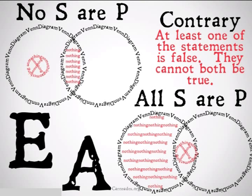It should be clear that if E is the case, then A can't be true. They can't both be true, because if E is the case, that X falls into that area of nothing for the A. And similarly, if A is true, E can't be true because that X with the circle around it would fall into that area of nothing.